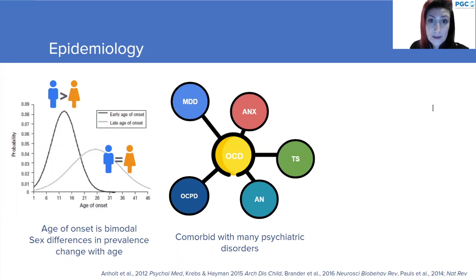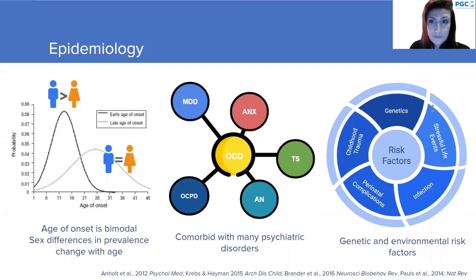OCD also co-occurs with several psychiatric disorders, the most common being major depressive disorder, but also various anxiety disorders like generalized anxiety disorder, Tourette's, as well as anorexia and obsessive compulsive personality disorder. There are several risk factors associated with OCD, including genetics, environmental factors like stressful life events, perinatal complications, childhood trauma, and infection in the case of PANDAS or PANS.